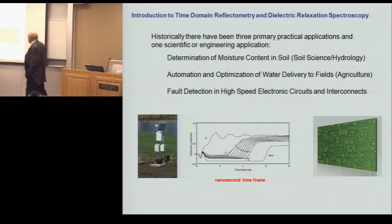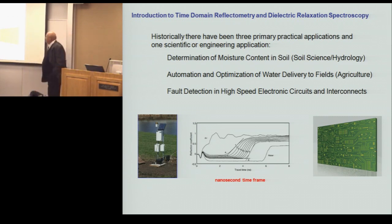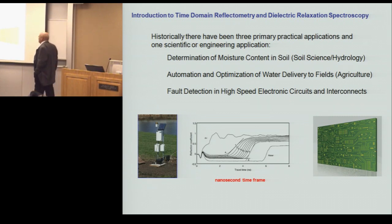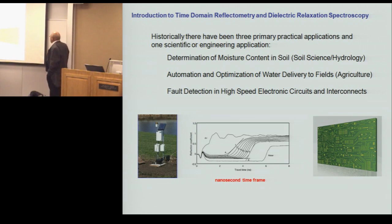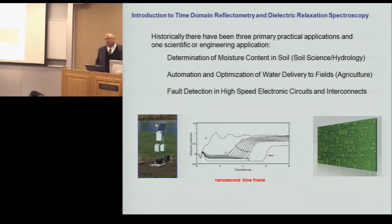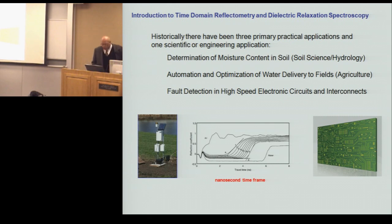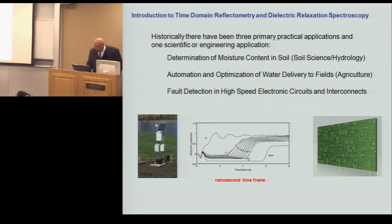It's a fairly fast time frame for acquisition. Fortunately, there's relatively inexpensive electronics available from Campbell Scientific who market these kinds of systems, so we didn't have to work the electronics from the ground up. The more exotic application — looking at transmission lines on circuit boards and interconnects — requires even faster electronics, which fortunately we haven't had to use, and that saves costs considerably.